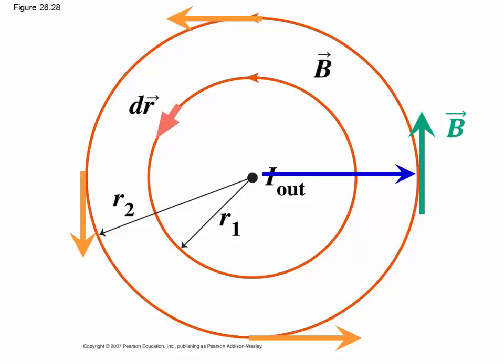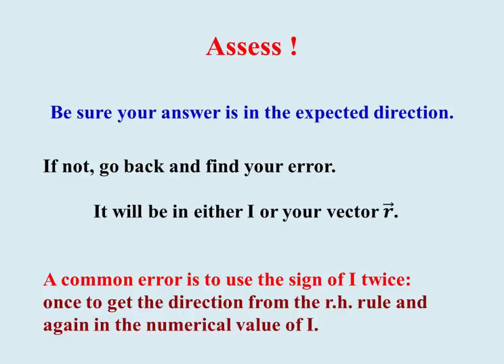Assess it with the right-hand rule. Here our b field is in the plus j hat direction, because the counter-clockwise rotation around that positive current is in the plus j hat direction over there. But if we are in the negative x side, then the positive current would produce a negative j hat unit vector. Our assessment should always check that the magnetic field from a positive current is rotating sort of counter-clockwise around that circle, tangent to the circle, and for a negative current into the board, into the paper, that that circulation is then clockwise. Assess it. Be sure your answer is in the expected direction.